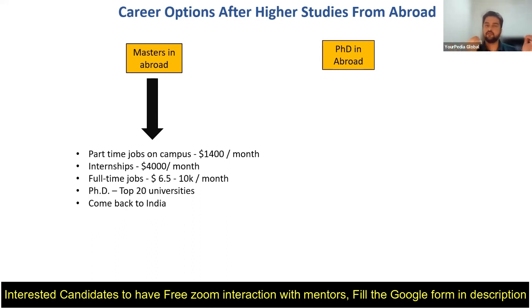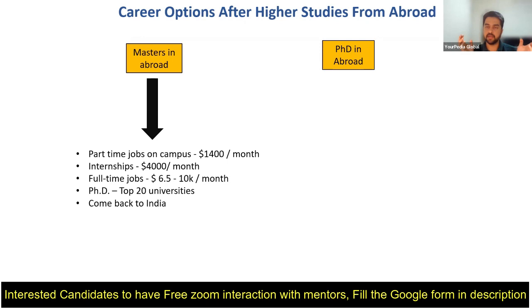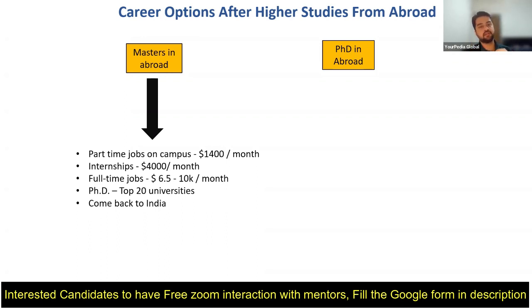After fall and spring semesters, there is a three-month summer session at every university. During this summer session, students go for internships at different companies. On average, across all departments, students get around $4000 per month during internship. If you're from computer science you may get more. Over three months that's around $12,000 — enough to pay half your semester fees. Internships are very helpful; always go for them.